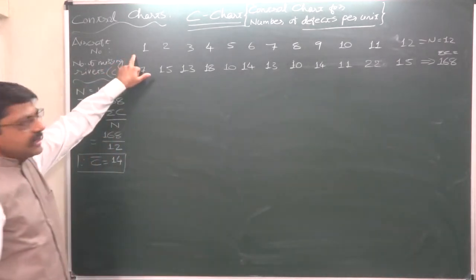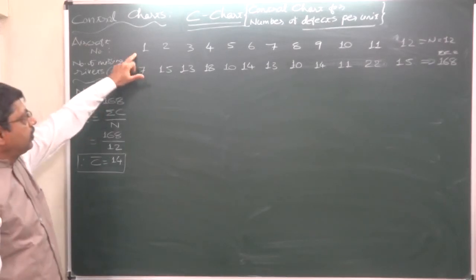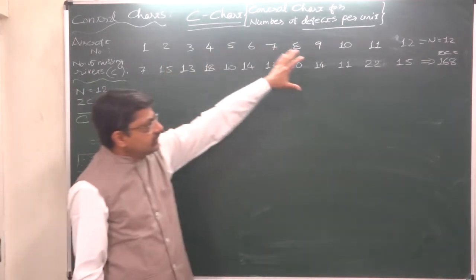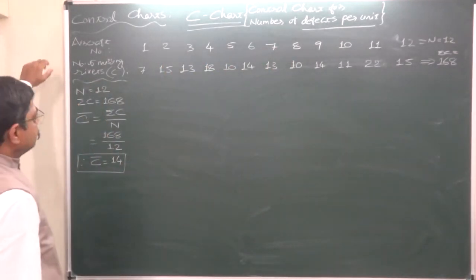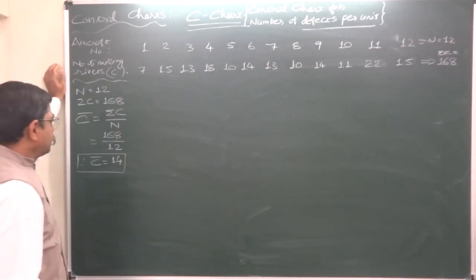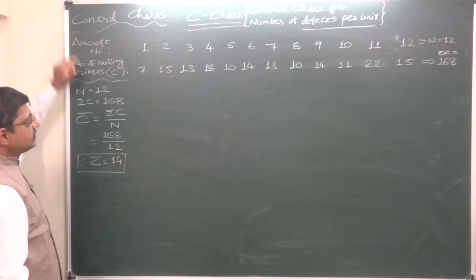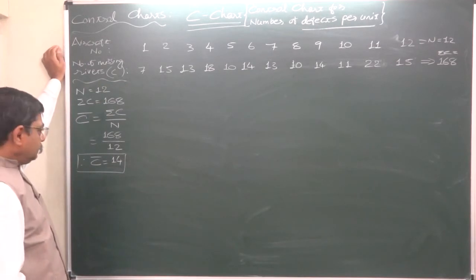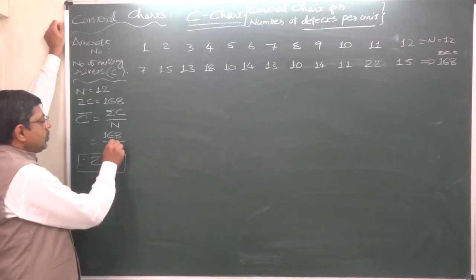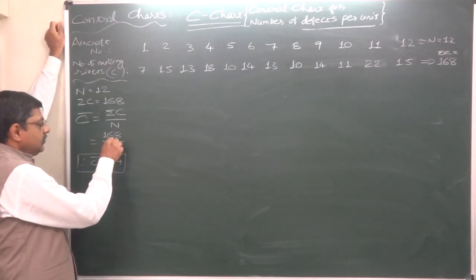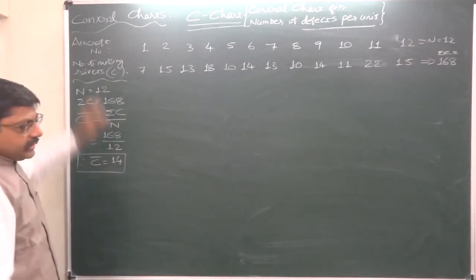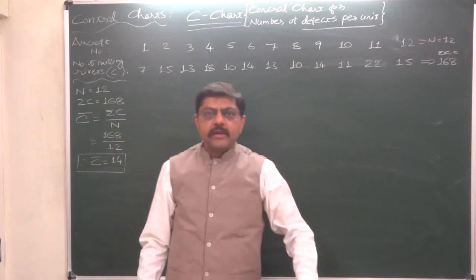Here we have 12 aircrafts inspected for number of rivets missing. This is the presentation of the data, and summation of the total number of missing rivets in all 12 aircrafts comes to 168. That is shown as sigma C. Number of aircrafts are 12, so we can have average number of defects per piece as 168 divided by 12, that comes to 14.